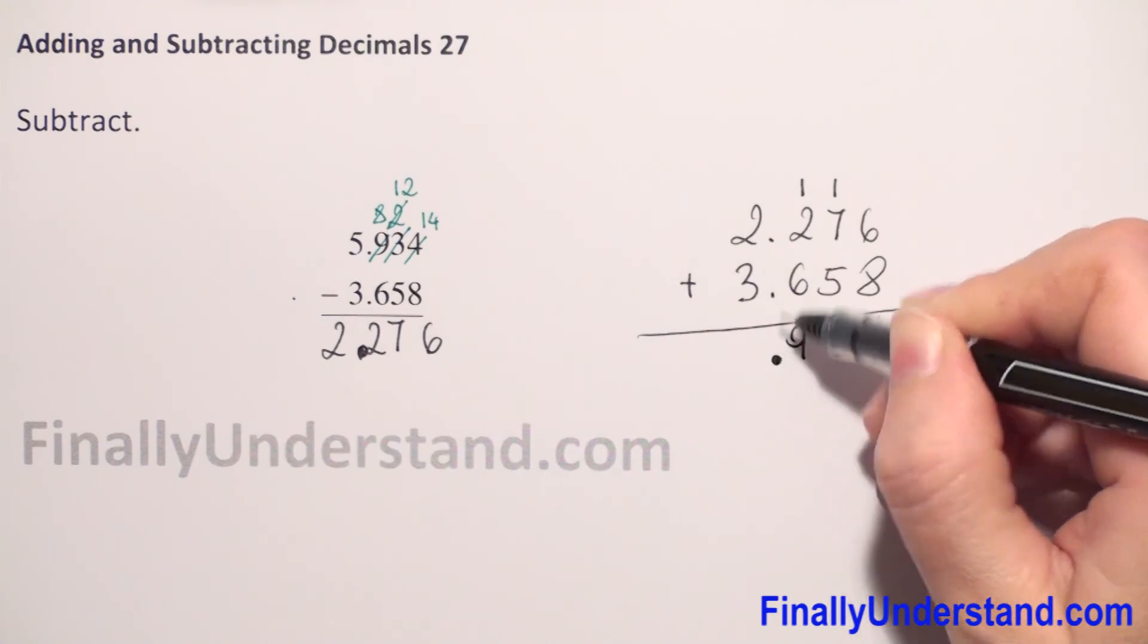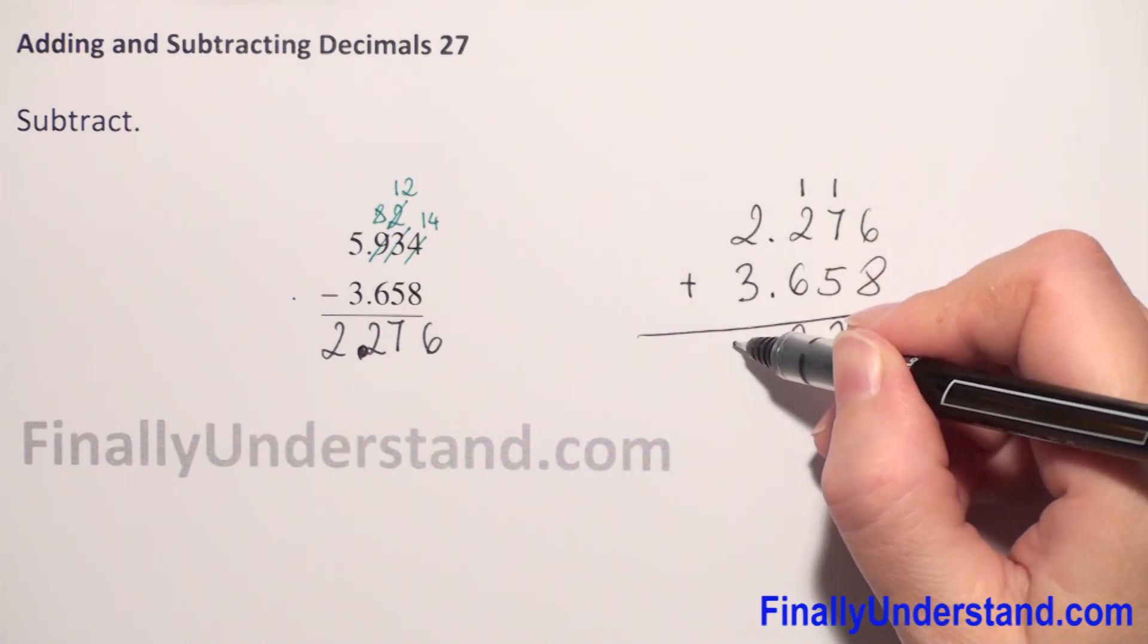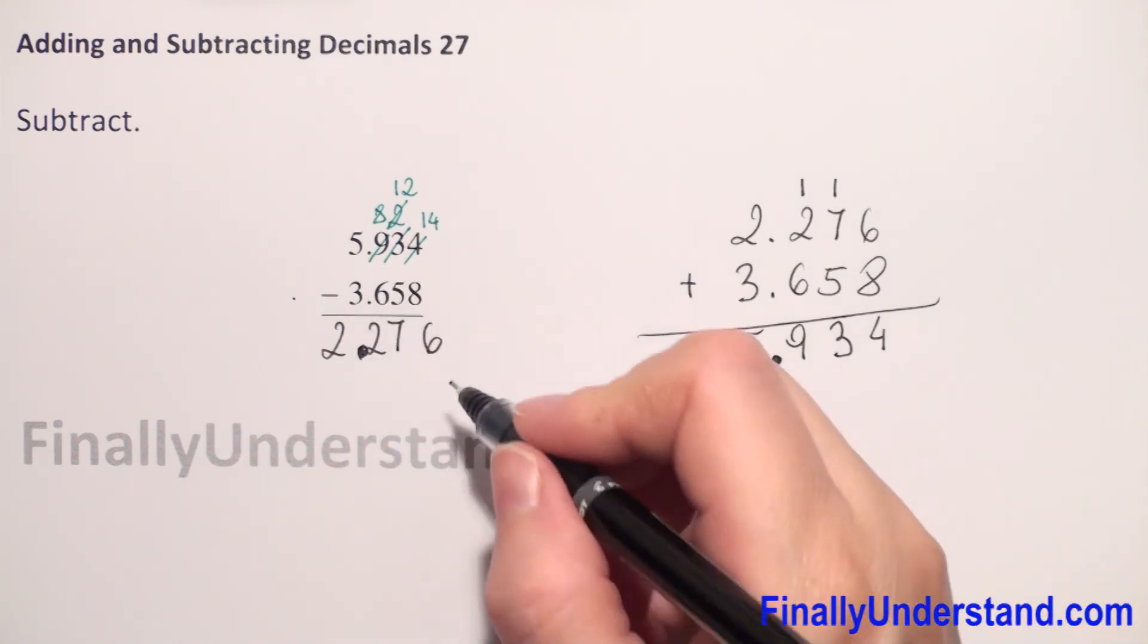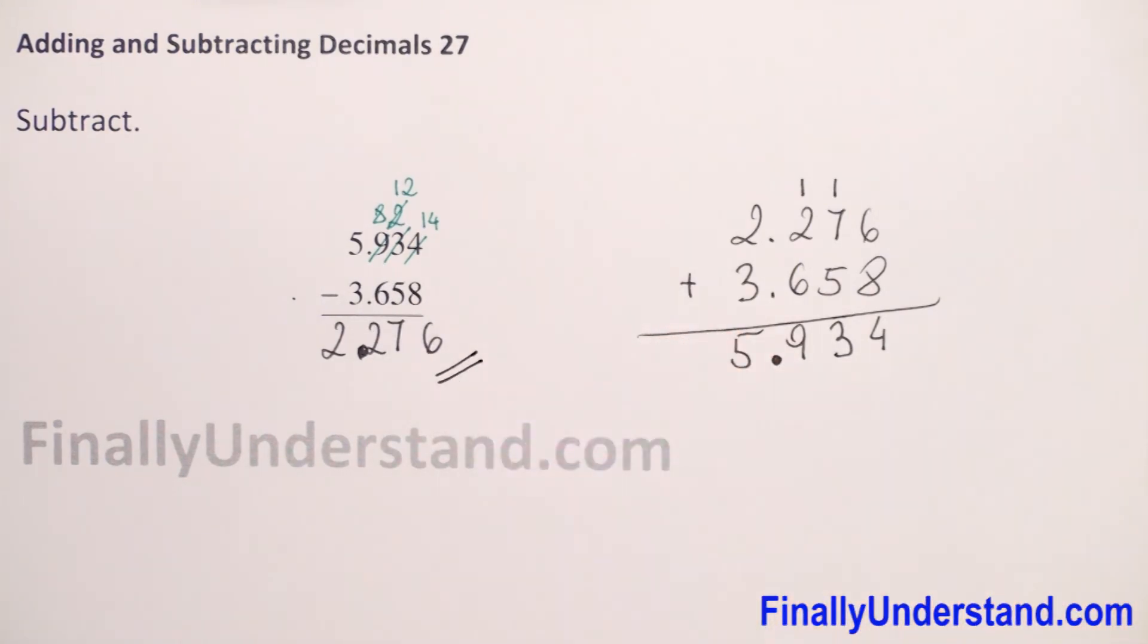We copy the decimal point. 2 plus 3 is 5. We got the same number which we have at the beginning, so everything is okay. This is my solution.